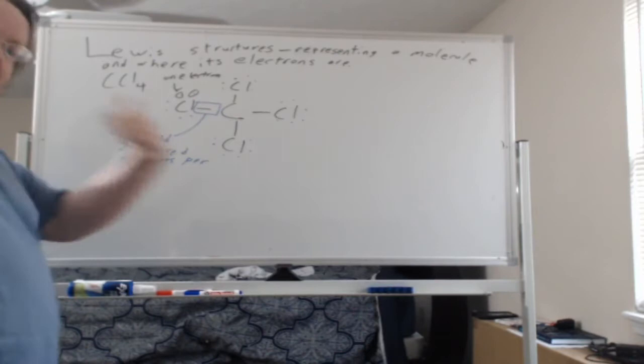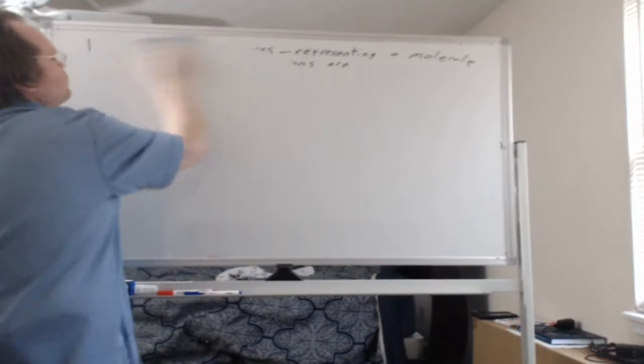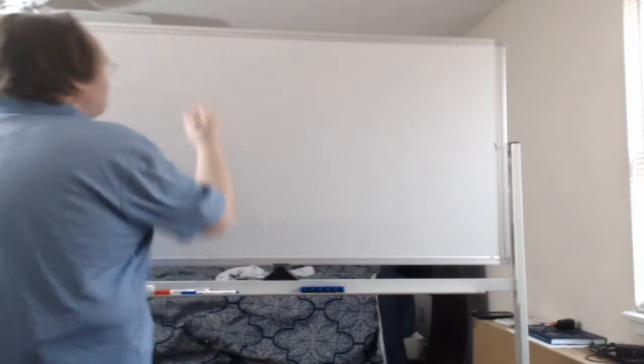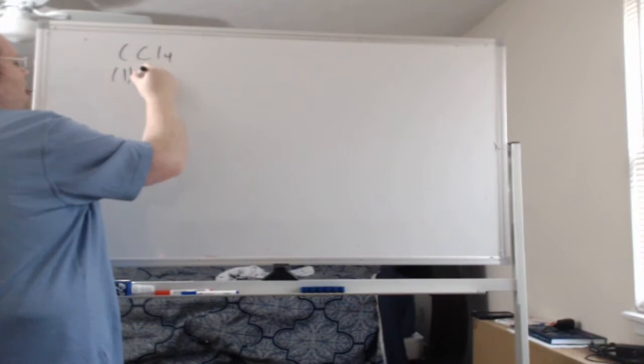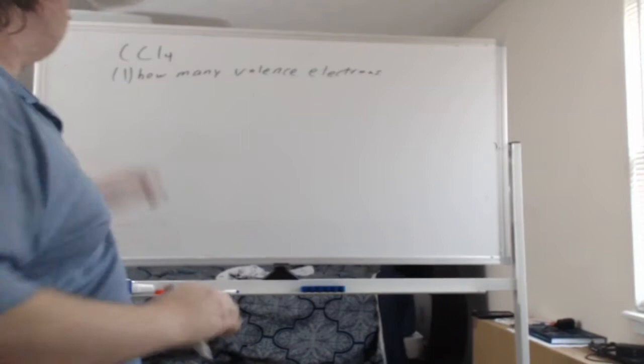So now, how did I get CCl4? Why did I draw four lines? Why did I draw six dots on each chlorine? And why did I put carbon in the middle? Let's go over that now. So what we do when we have a molecule is we have to do a few things. So step one, how many valence electrons? I need to know how many valence electrons there are or else I'm not going to know what it is I need to draw.